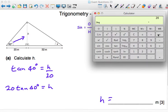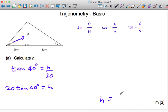20 multiplied by tan 40—and on this calculator you hit the 40 and then the tan button, whereas on most calculators it's the other way around. 16.78 to two decimal places. h is 16.78 meters.